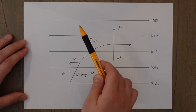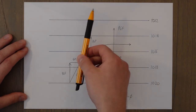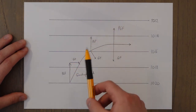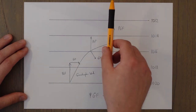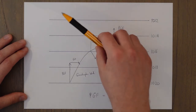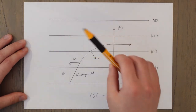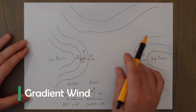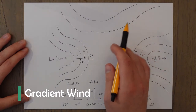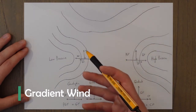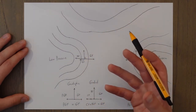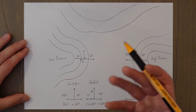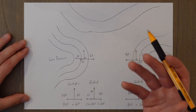In the northern hemisphere we get pulled to the right by the geostrophic force, but in the southern hemisphere you get pulled round to the left. When the isobars are straight lines, we consider the pressure gradient force and the geostrophic force when we calculate the geostrophic wind.